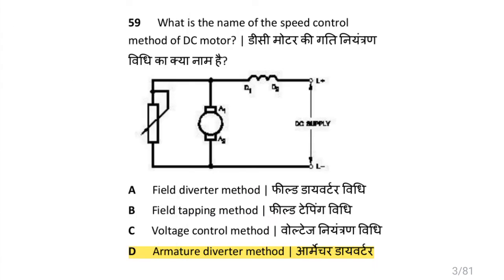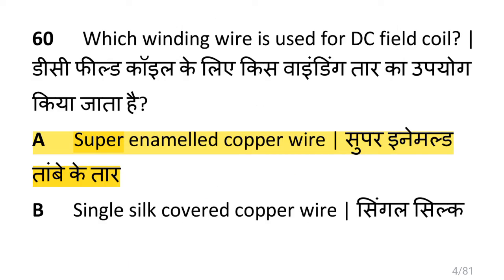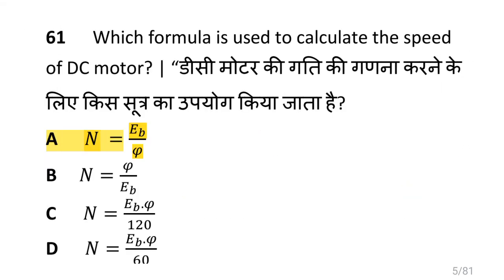What is the name of the speed control method of DC motor? That is the armature diverter method. Which winding wire is used for DC field coil? That is super enameled copper wire. Which formula is used to calculate the speed of DC motor? That is n equals Eb divided by phi.